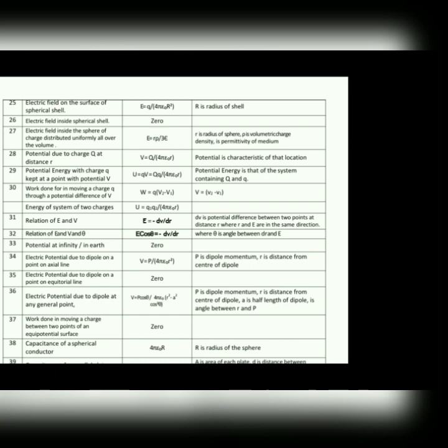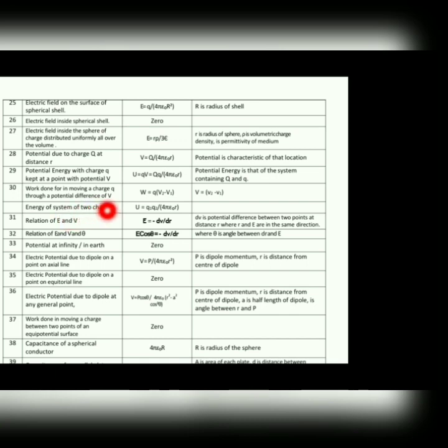Potential due to charge Q at distance R: the basic formula is V = kQ/R. Potential energy with charge q kept at a point with potential V: U = qV = qQ/(4πε₀R) = kQ₁Q₂/R — this is the potential energy formula. Work done in moving a charge Q through a potential difference V: W = Q(V₂ − V₁).